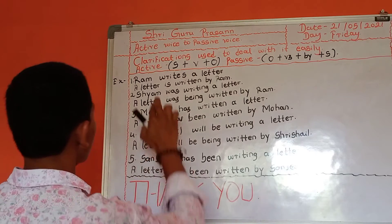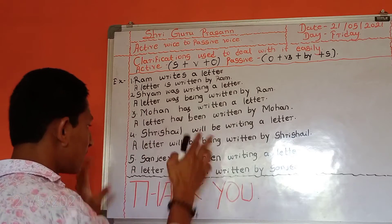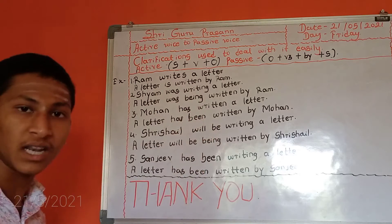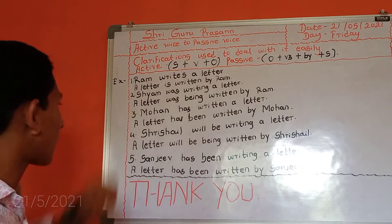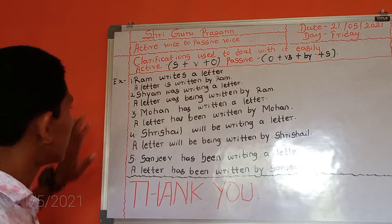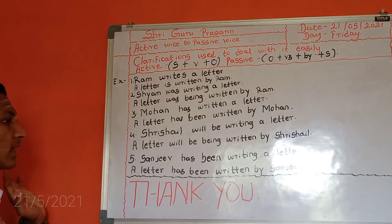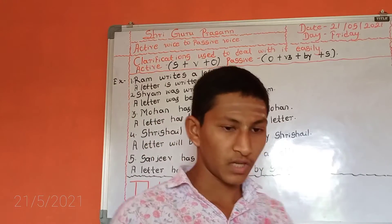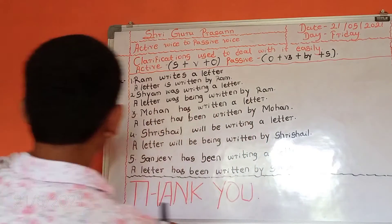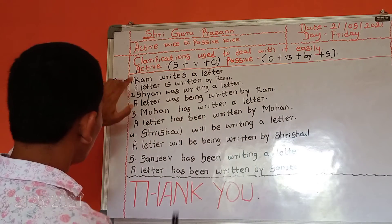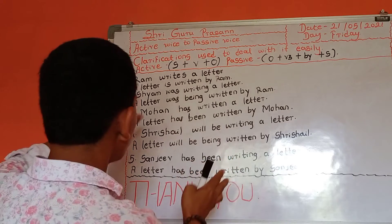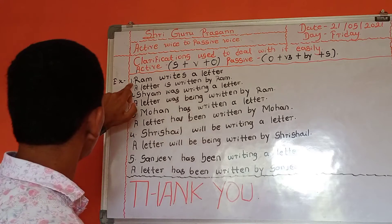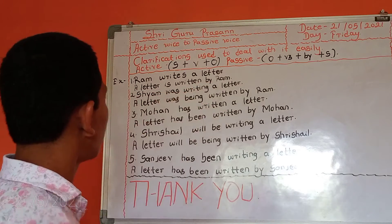This is so easy. I have written these examples and through these examples I will elaborate about the grammar topic easily. You can take a screenshot here. Through the examples you will understand thoroughly. Ram writes a letter — means a letter is written by Ram.